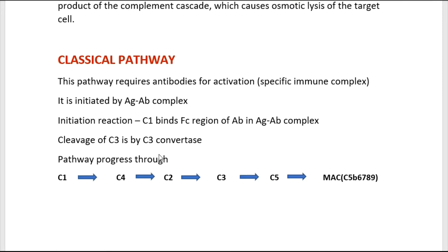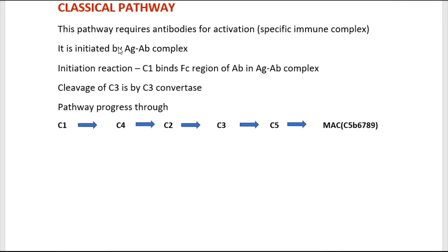The classical pathway requires antibodies for activation and is initiated by antigen-antibody complexes. C1 binds with the Fc region of the antibody in the antigen-antibody complex, and cleavage of C3 is by C3 convertase. The pathway progresses: C1 gives rise to C4, which leads to C2, then C3, and finally C5, giving rise to the membrane attack complex.